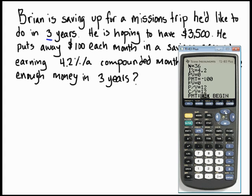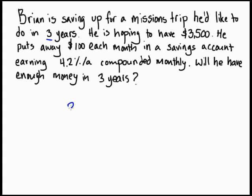Now we're going to bring our cursor up to future value, which is what we're solving for. We'll hit Alpha and Enter, which is Solve. And will it be $3,500? It's $3,829.50! So he will have $3,829.50 — this is a good savings plan that Brian has, and we can figure that out with TVM Solver on a TI-84.